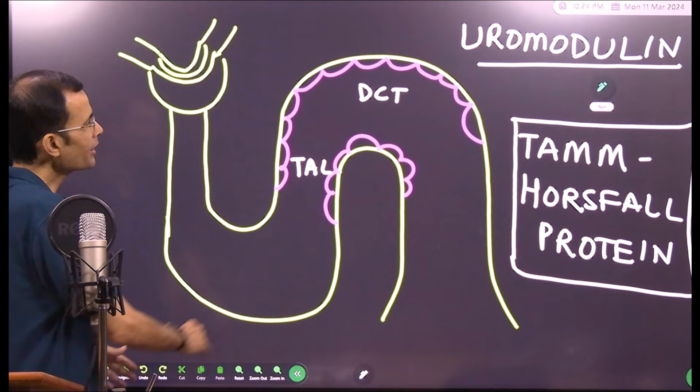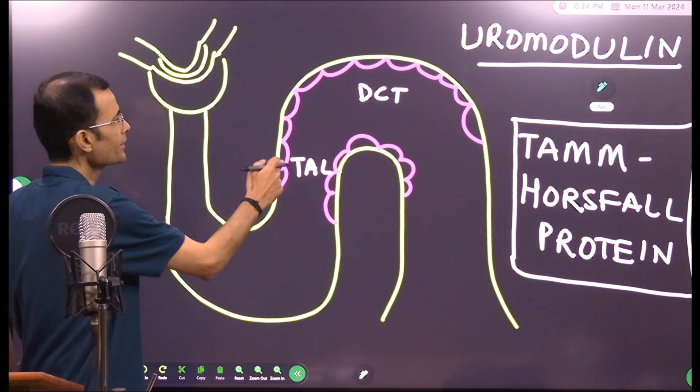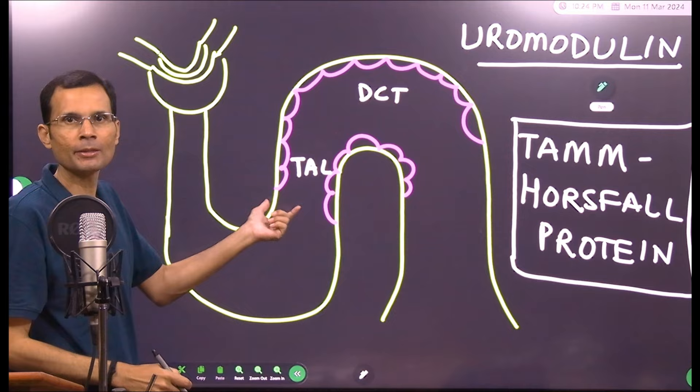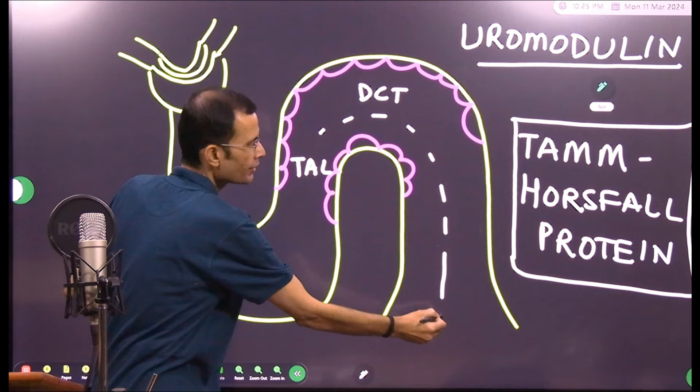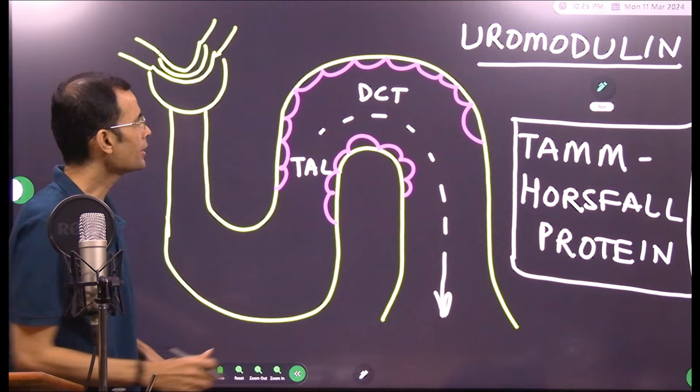So basically this glycoprotein which is also called as uromodulin is synthesized by the tubular cells, renal tubular cells in the thick ascending limb, the cells that are lining the thick ascending limb and the early part of DCT. Now these cells synthesize this Tamm-Horsfall protein and then it appears into urine. So it is not coming from the plasma, it is being synthesized by the renal tubular cells and it is coming into the urine.